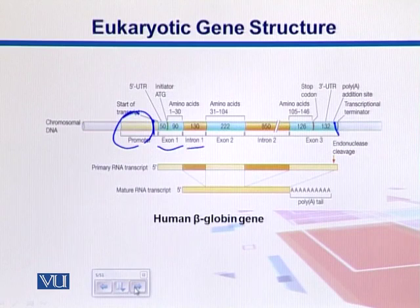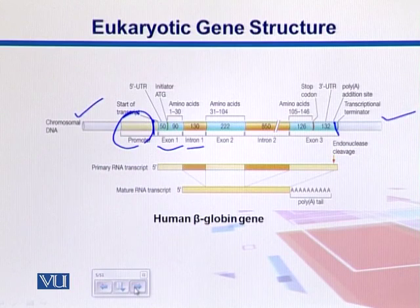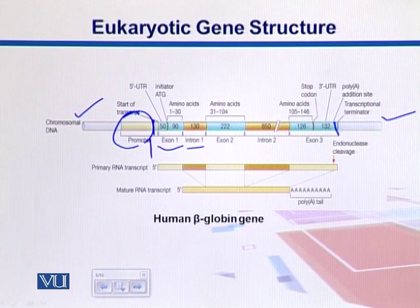There is a 5' UTR region. This end of the gene is the 5' end and this is the 3' end. Towards the 5' end we have a 5' UTR — UTR stands for untranslated region. So this region is transcribed into messenger RNA, but no protein comes from here, so that region stays as untranslated.